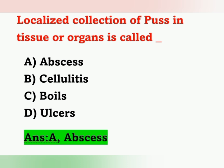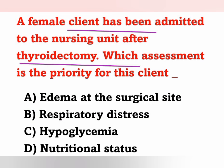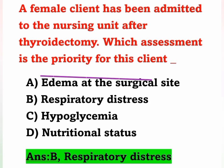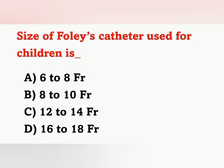Next question: A female client has been admitted to the nursing unit after thyroidectomy. Which assessment is the priority? Options: A) Edema at the surgical site, B) Respiratory distress, C) Hypoglycemia, D) Nutritional status. Immediately after thyroidectomy, the priority assessment is respiratory monitoring. Option B, respiratory distress, is the correct answer, as respiratory status must be assessed immediately after surgery.